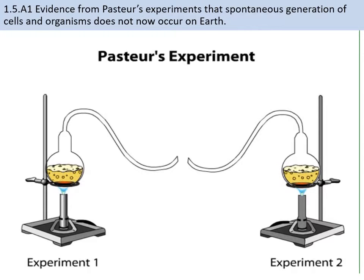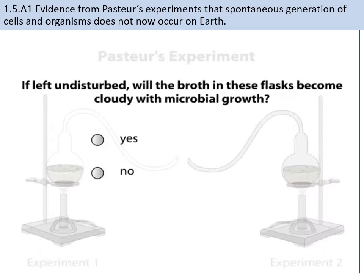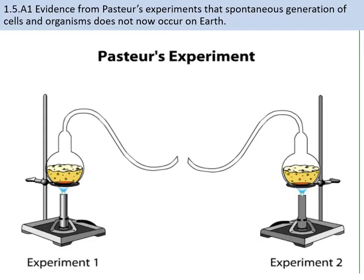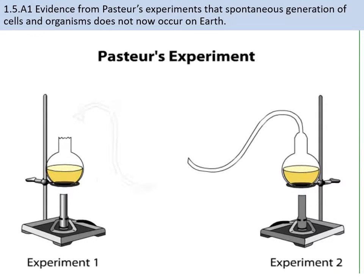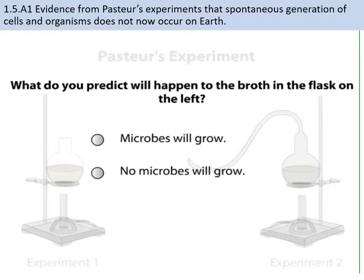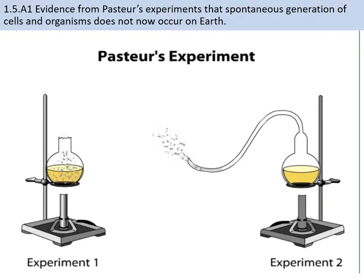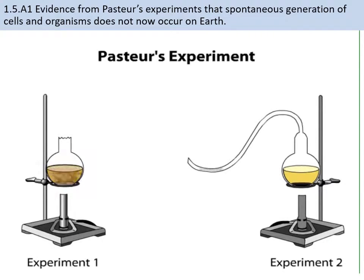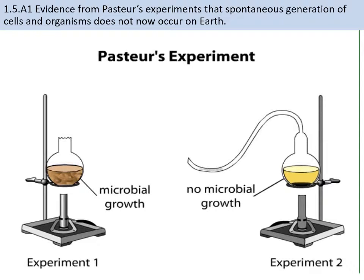After the broth had been sterilized, Pasteur broke off the swan necks from some of the flasks, exposing the nutrient broth to air from above. The remaining flasks were left intact. Over time, dust particles from the air fell into the broken flasks, but in the intact flasks, dust particles remained near the tip of the swan necks and were unable to travel against gravity into the flasks. The broth in the broken flasks quickly became cloudy — a sign that it teemed with microbial life. However, the broth in the unbroken flasks remained clear. Without the introduction of dust on which microbes can travel, no life arose. Pasteur thus refuted the notion of spontaneous generation.